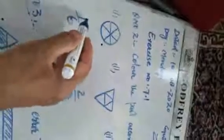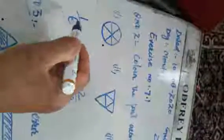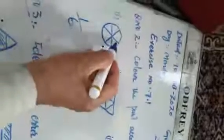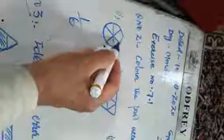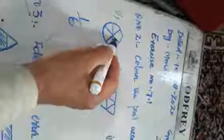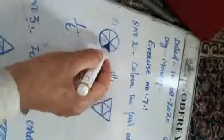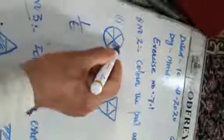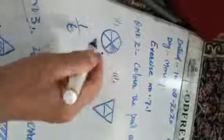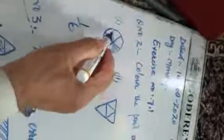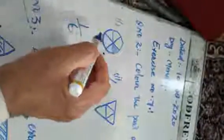Here the numerator is 1, that means out of 6 parts, one part should be colored. You can color any of these parts. This portion which I colored here represents 1 by 6, that means 1 out of 6 equal parts.